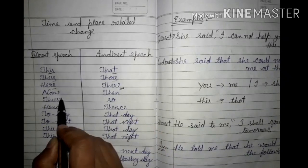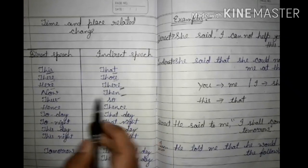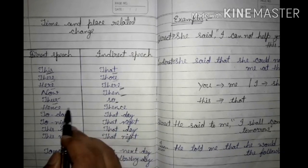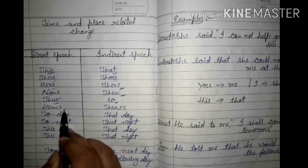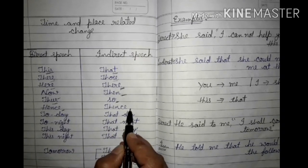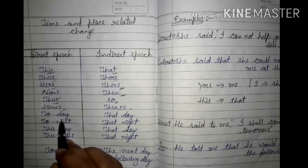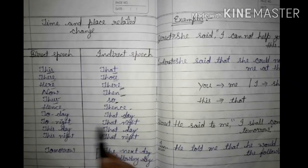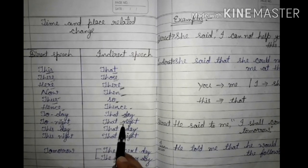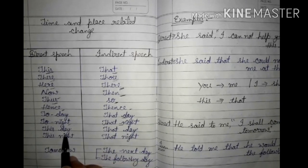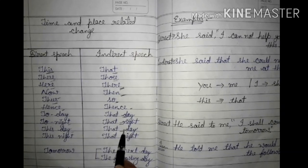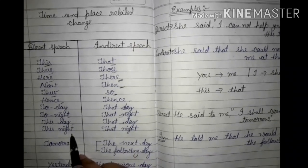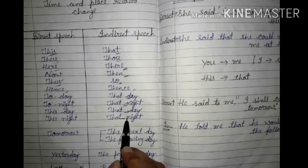'Now' will change into 'then'. 'Thus' you have to change into 'so'. 'Hence' will change into 'hence'. 'Today' will change into 'that day'. 'Tonight' will change into 'that night'. 'This day' changes into 'that day', and 'this night' you have to change into 'that night'.